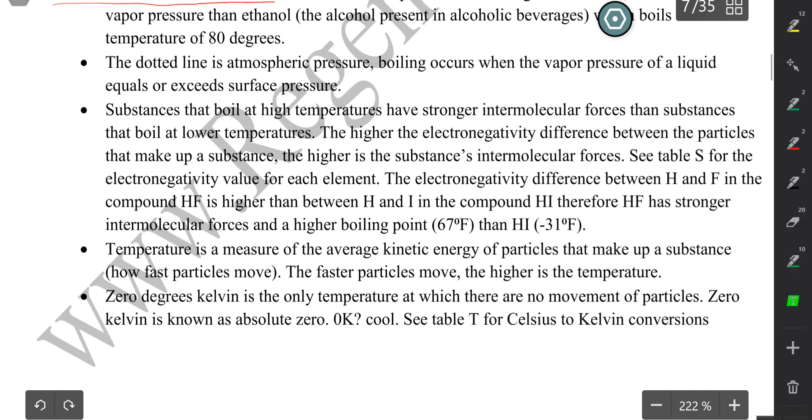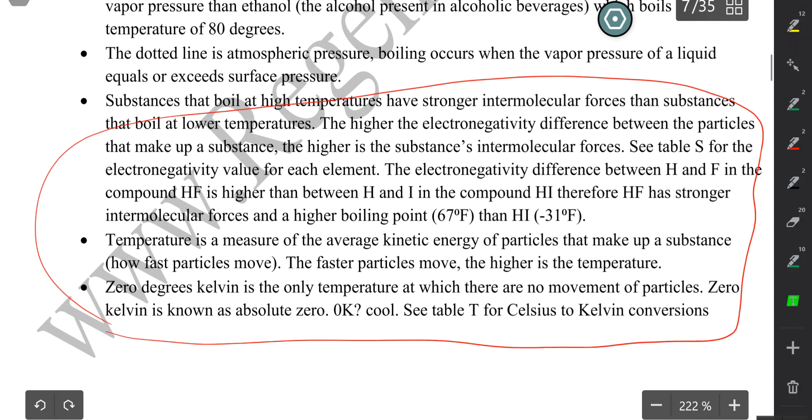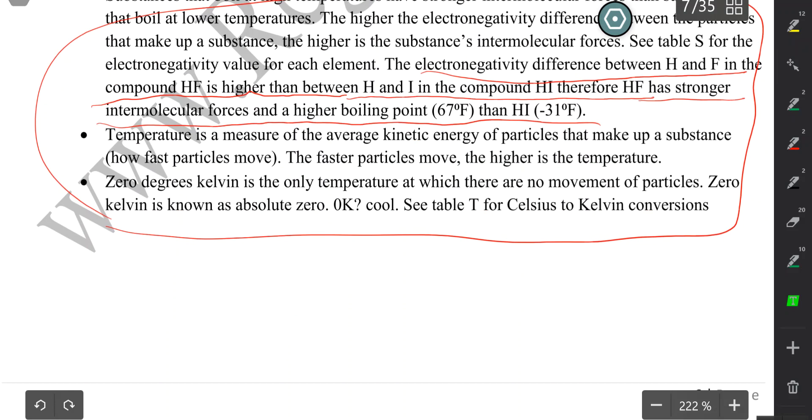There's more information for you to read. Here I talk about the electronegativity difference between H and F in the compound HF is higher than between H and I in the compound HI. Therefore, HF has stronger intermolecular forces and higher boiling point. So we talked about HI. Let's discuss it a little more. If you're comparing HF—the bond between HF versus the bond between HN—you can determine which bond is stronger, therefore which bond has a higher boiling point, by simply just calculating the electronegativity difference between these two atoms.